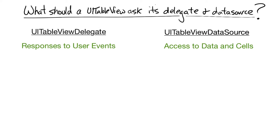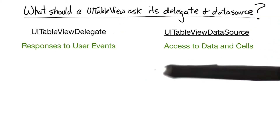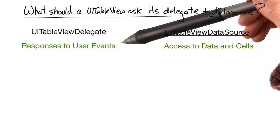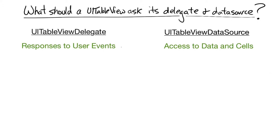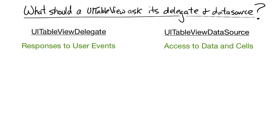UITableViews have two delegate protocols with a total of 44 methods. The two protocols are the UITableViewDelegate, which governs responses to user events, and the UITableViewDataSource, which enables the table to access data and cells. Think of the delegate as being associated with events and the data source as being associated with data, appropriately enough.